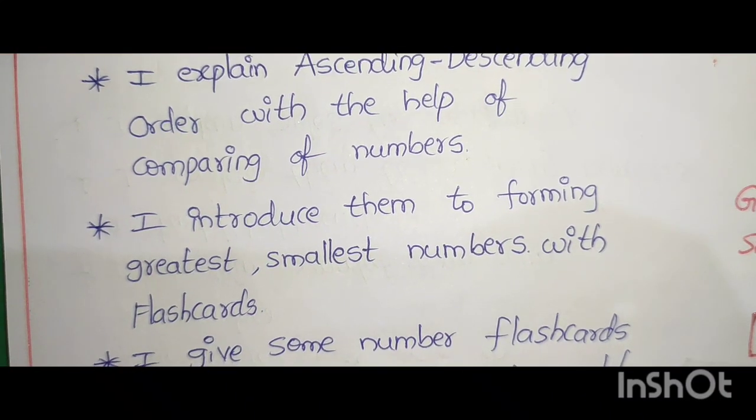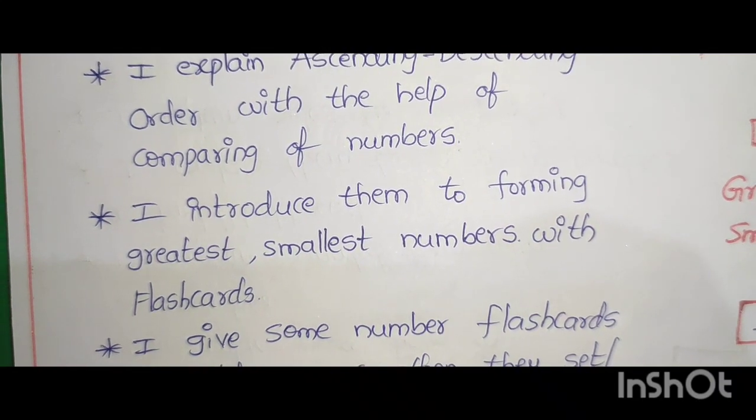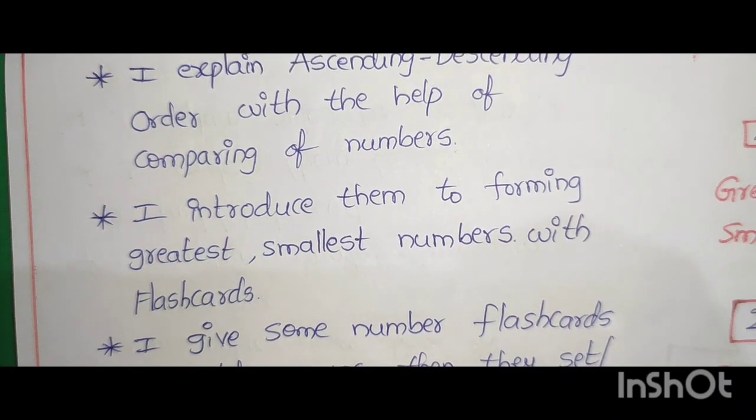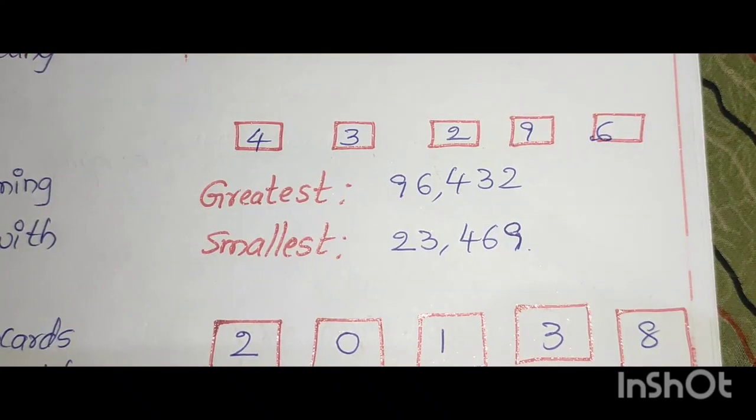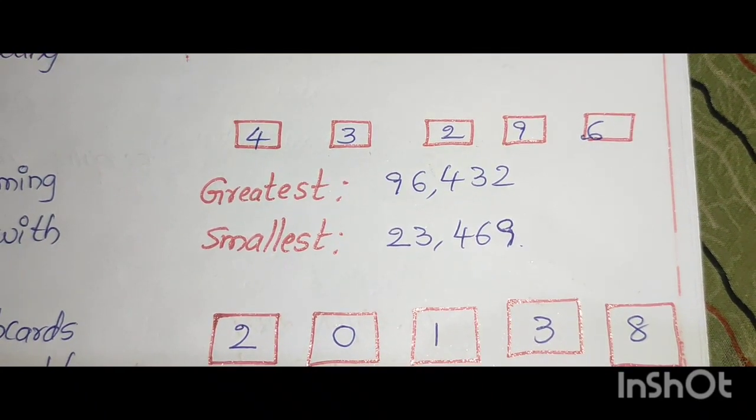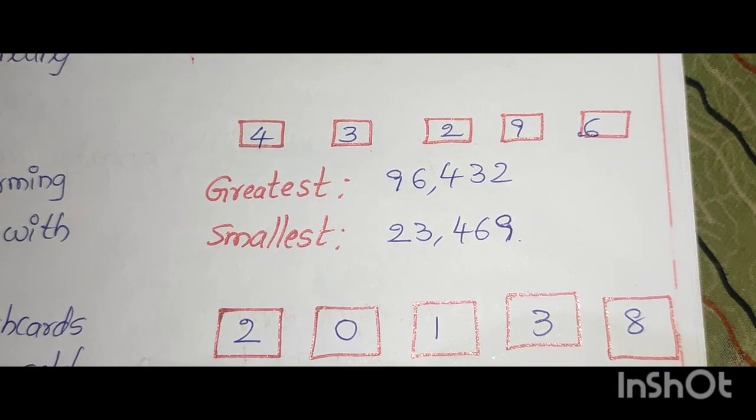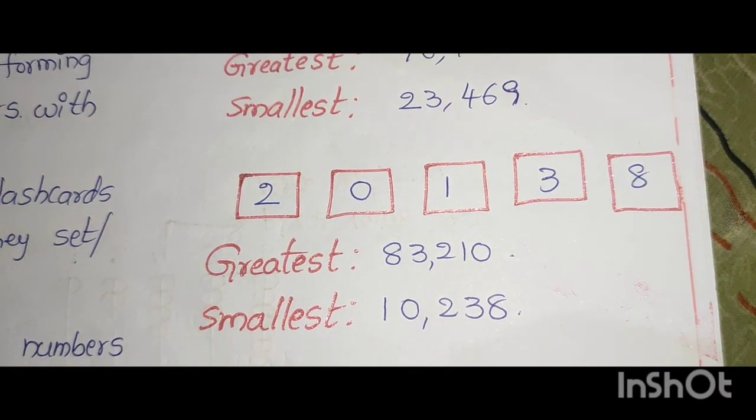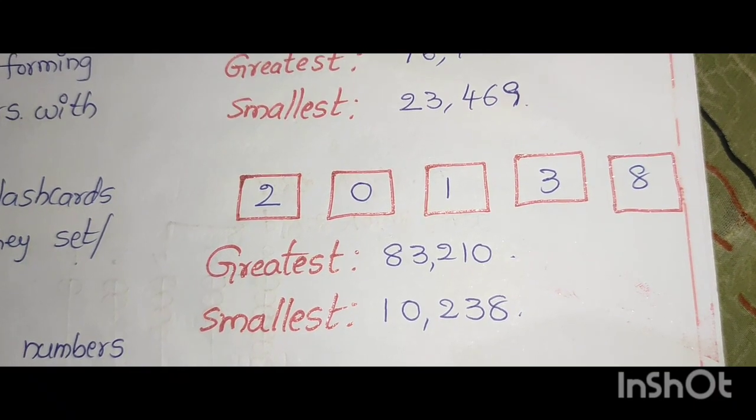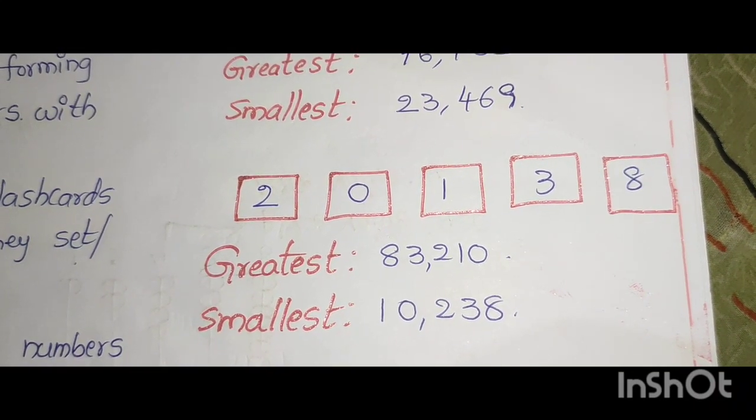I explain them to comparing numbers. I explain rules for comparing. I explain ascending, descending order with the help of comparing of numbers. I introduce them to forming greatest, smallest numbers with flashcards. I give some flashcards: 4, 3, 2, 9, 6 - Greatest 96,432, Smallest 23,469. Like 2, 0, 1, 3, 8 with 0 - Greatest 83,210, Smallest 10,238.